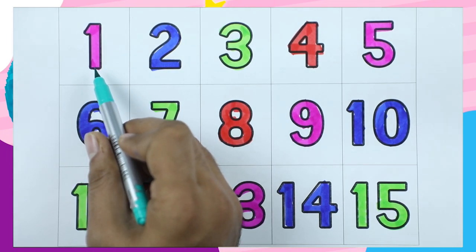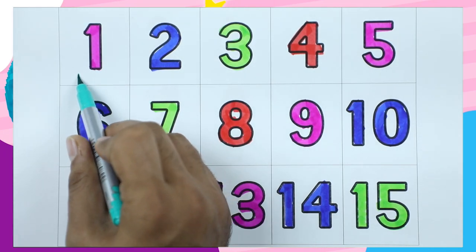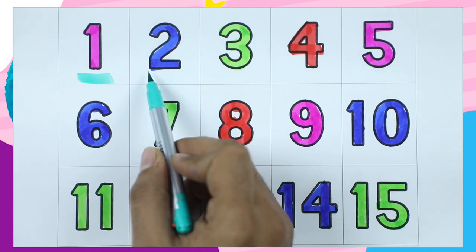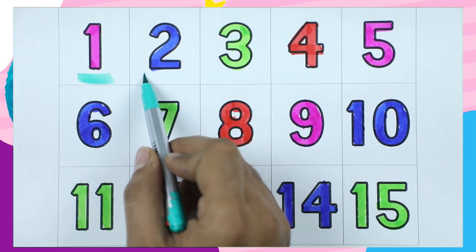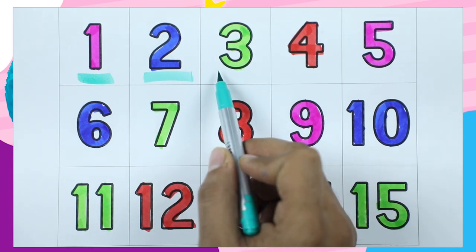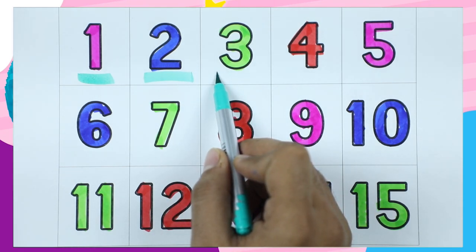Which number? Tell me. Yes, it's one with pink color. Number two, which color? Number two, blue color. Number three with green color.